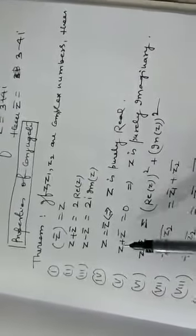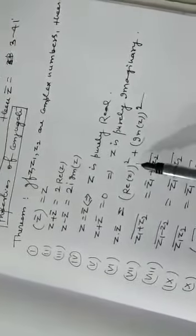Now I want to discuss some properties of the conjugate of a complex number. It will be beneficial for you. Property 1: z bar bar is equal to z. Property 2: z plus z bar is equal to twice the real part of z. Property 3: z minus z bar is equal to twice the imaginary part of z. Property 4: z is equal to z bar if and only if z is purely real. This property is very, very important.